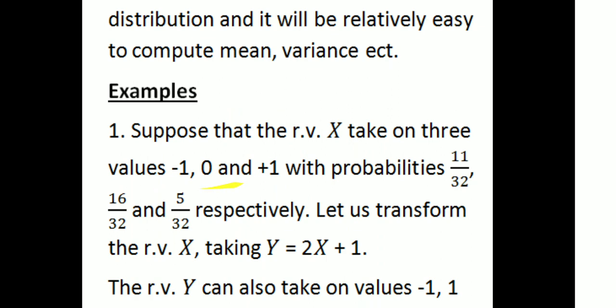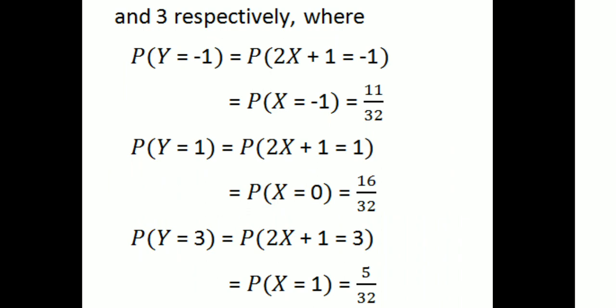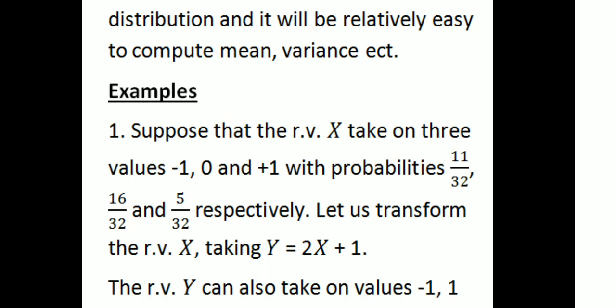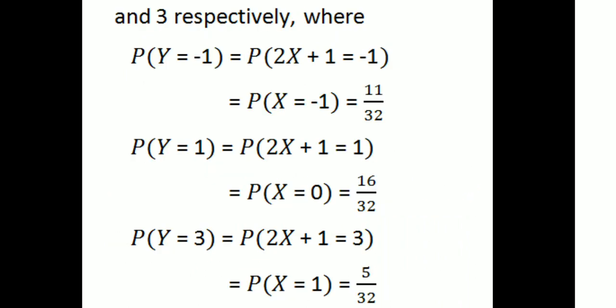The original values are minus 1, 0, 1. Applying Y = 2X + 1: for X = minus 1, we get 2(−1)+1 = minus 1; for X = 0, we get 2(0)+1 = 1; for X = 1, we get 2(1)+1 = 3. So Y takes values minus 1, 1, 3. The probability of Y = minus 1 equals P(X = minus 1) = 11/32.